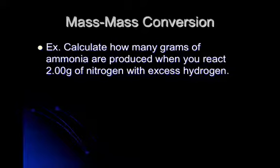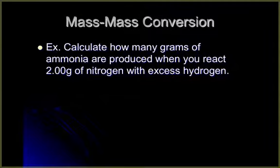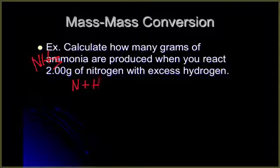Let's go on and start with this. So first question here, it's asking us to calculate how many grams of ammonia—and just so you know, ammonia is NH3—are produced when you react two grams of nitrogen with excess hydrogen. So we are reacting nitrogen and hydrogen, remember both of those are diatomic, and we are creating ammonia.